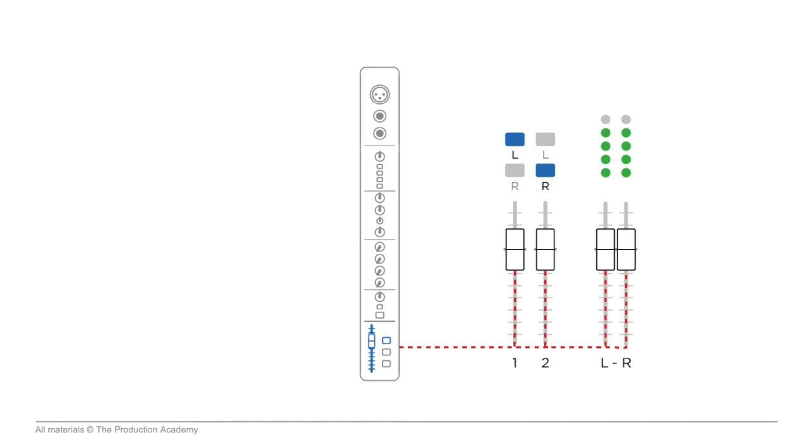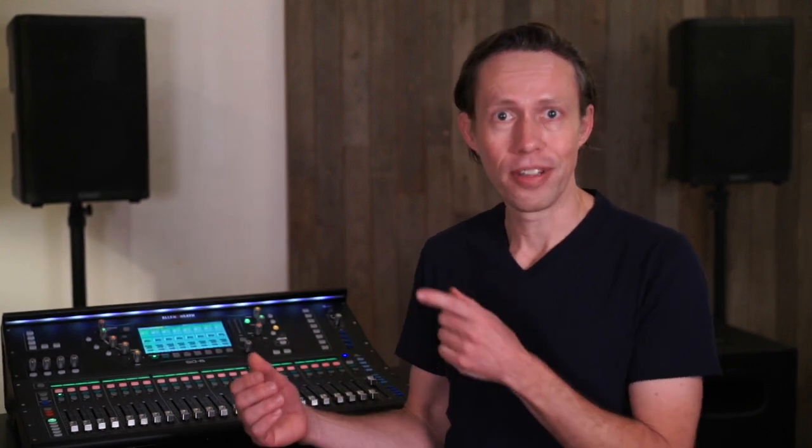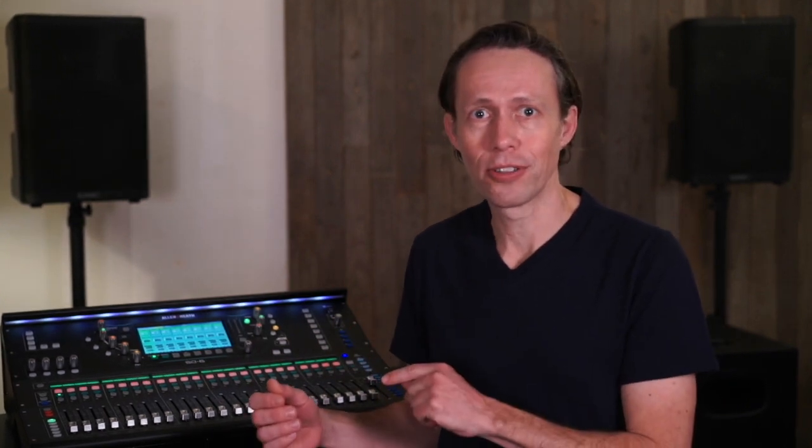The main left-right mix can then feed the main speaker system — and we talk through this more later. Now with analog consoles, the inputs and outputs use separate physical faders, with the inputs in one section and the outputs in another. But with digital consoles, the faders can be switched back and forth. Right now these faders are showing the inputs of the console.